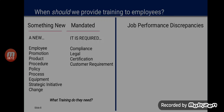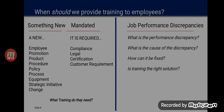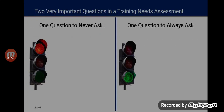These two parameters — something new and something mandated — answer the question of what training is required, determining the content. The third parameter is job performance discrepancies: what causes those discrepancies, and can they be fixed through training? First you answer yes or no to whether discrepancies exist; then you identify what is triggering them; then you ask whether training is the solution. This brings me to three key questions: when is training needed, what training is required, and who — the audience — requires it.